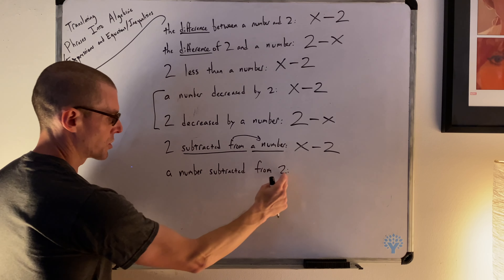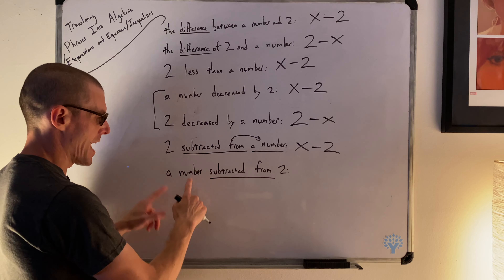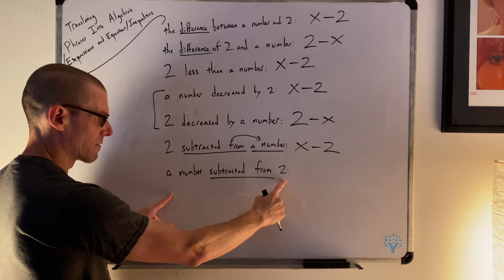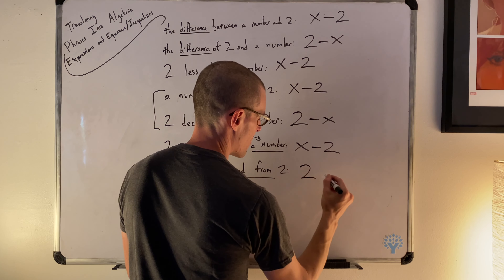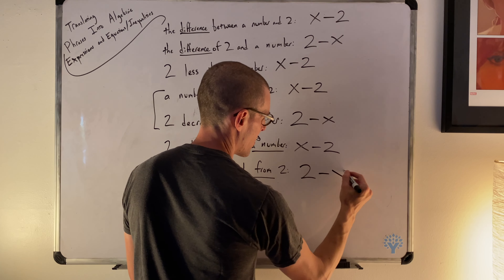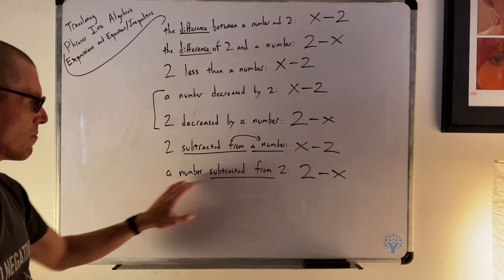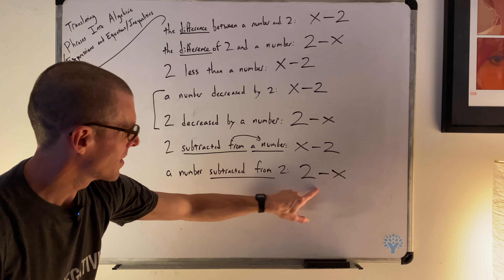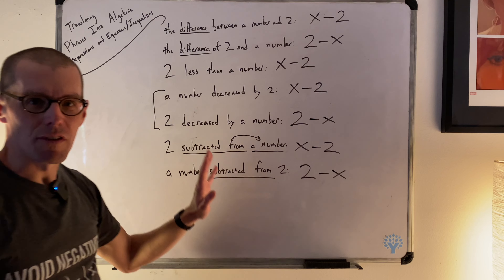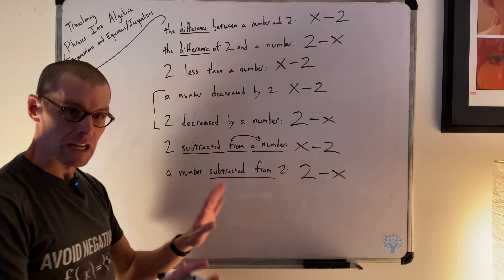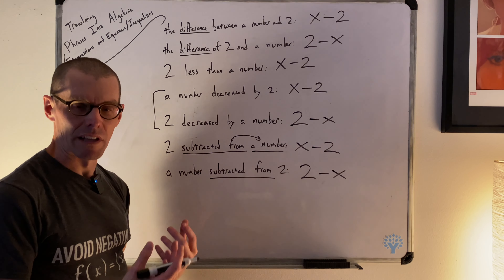A number subtracted from two: who's being taken away from whom? X is being subtracted from two, so two is being cut down by x. That gives us two minus x — two in the lead minus x. Since subtraction does not have commutativity, none of these could have been any other way. That's a big step up in difficulty.